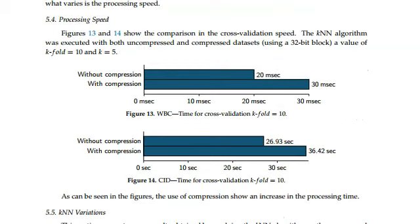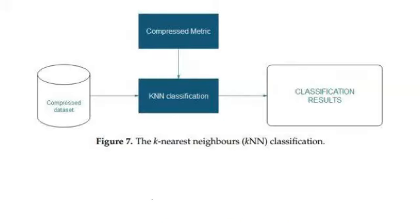The inclusion of the distance calculation for compressed categorical data slightly increases the classification time, because it is necessary to decompress the observations prior to the distance calculation to determine the nearest neighbors. This paper also provides an algorithm for Hamming distance without decompression.